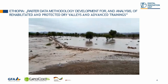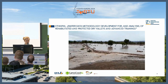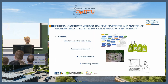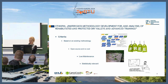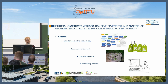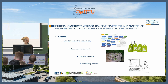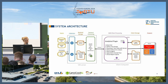Of course we were given some criteria. We had to base it on an existing methodology, which was given to us by a process diagram. It needed to be free and open source, of course. It needed to be low maintenance, like your normal gravel garden. And it also needed to be statistically relevant. So we came up with an idea — a simple architecture.